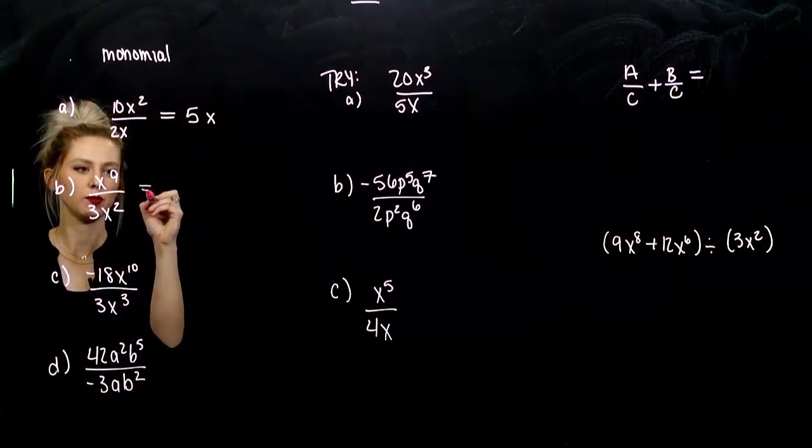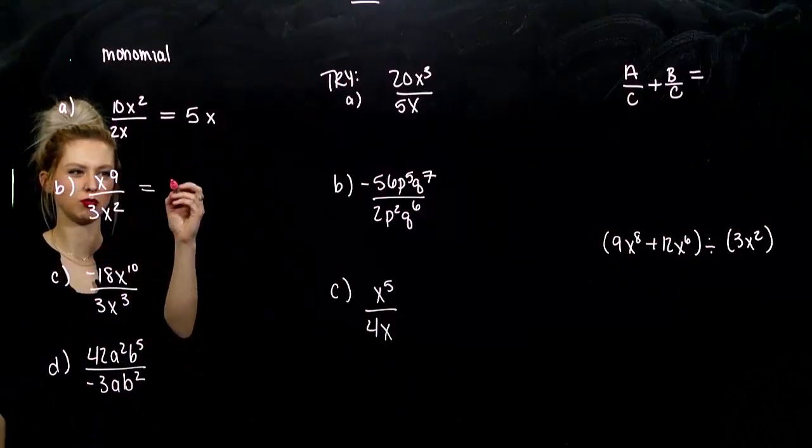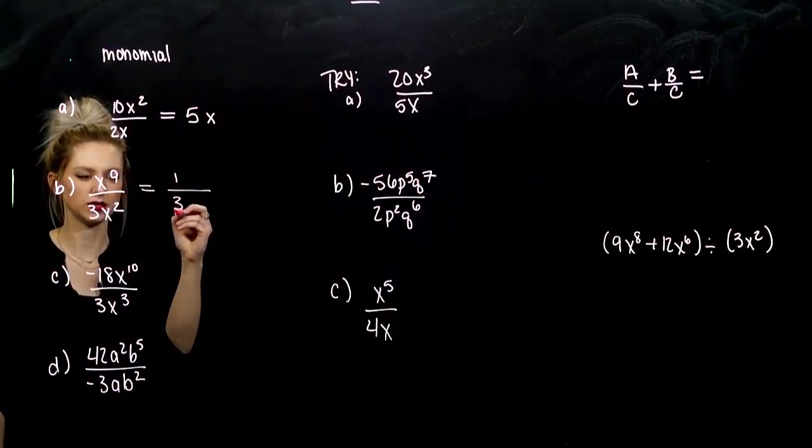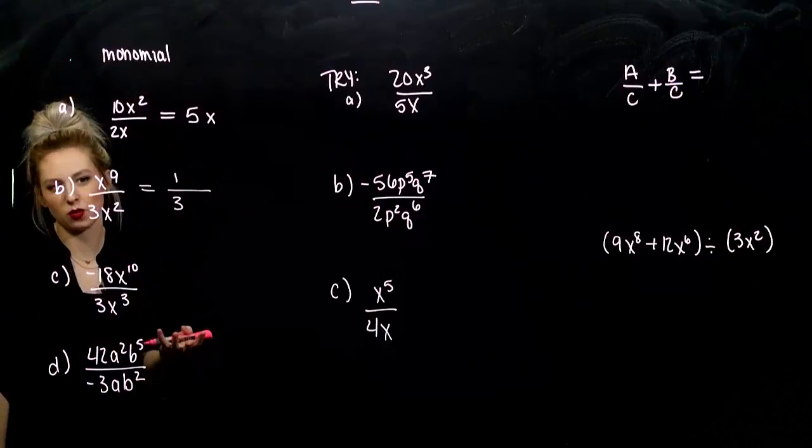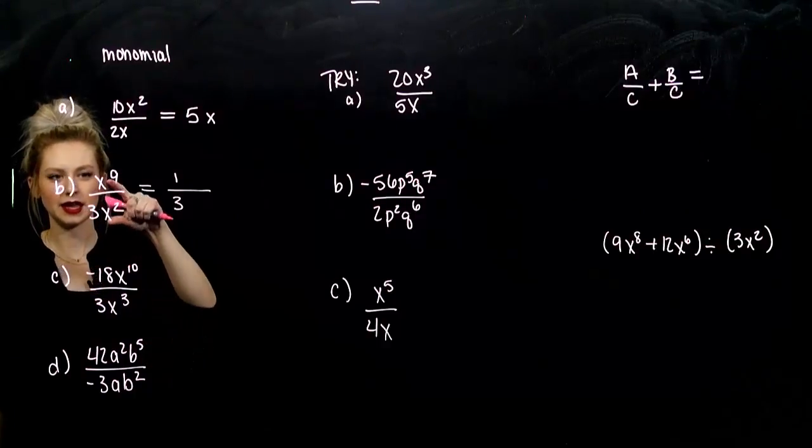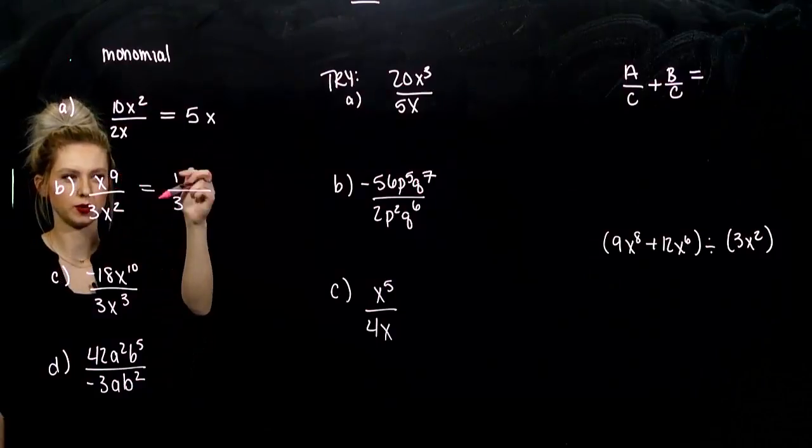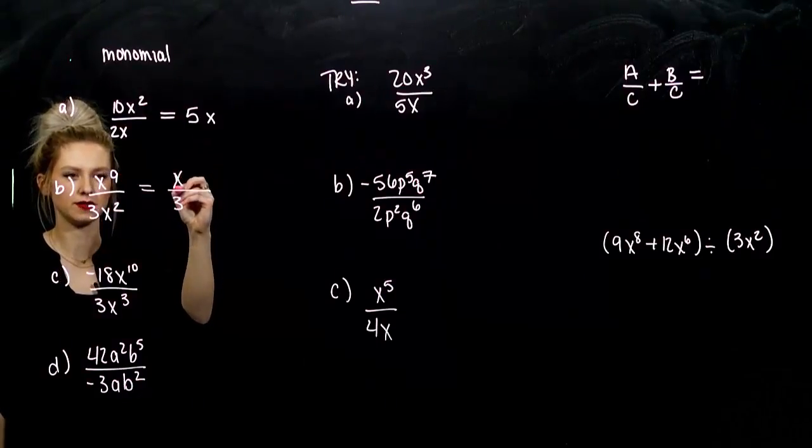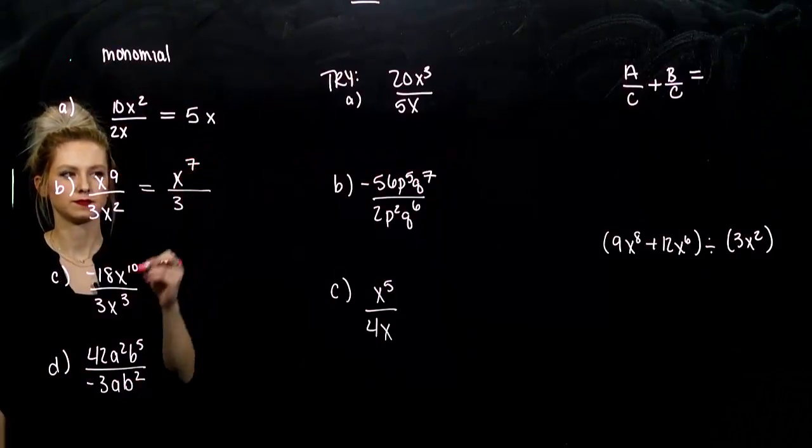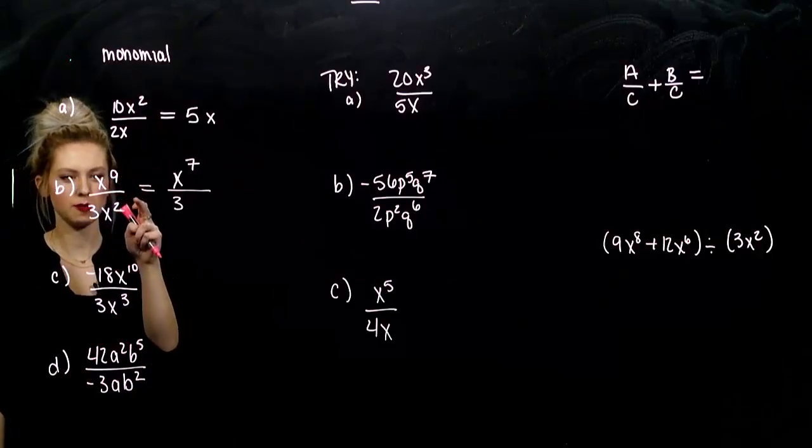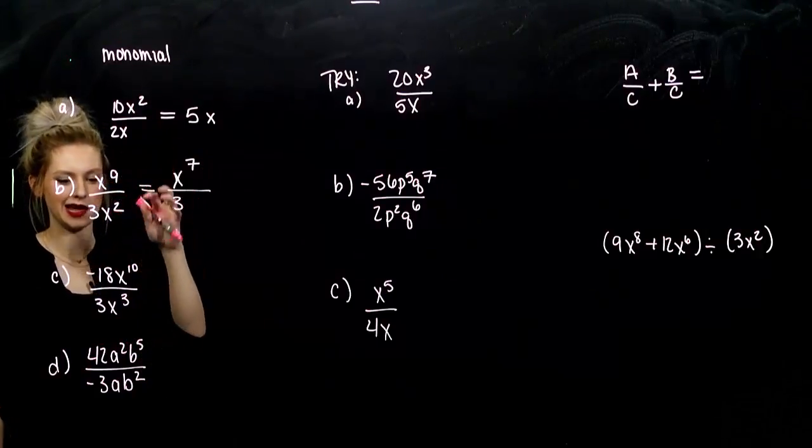And for part b, I have a 1 up top and a 3 down below. They don't cancel at all. They don't simplify. So, they stay where they are. And again, I have the same base and division, so we subtract the exponents. So, how many factors of x do I have left? 7. Take the top number minus the bottom, and they stay up top.